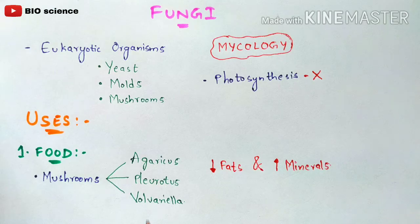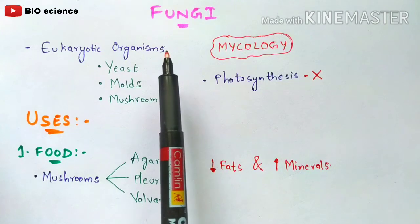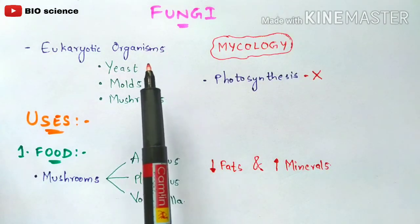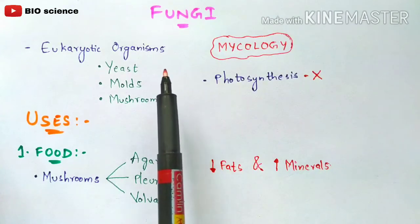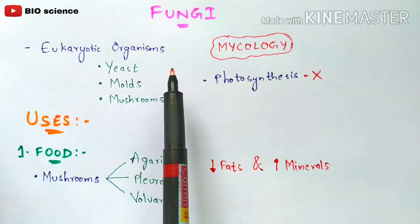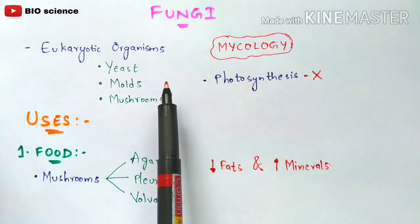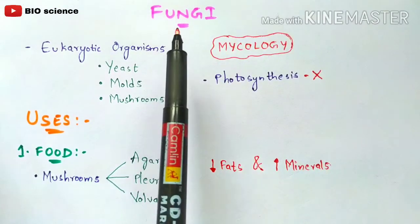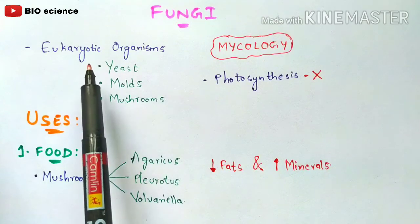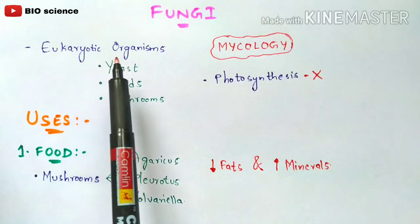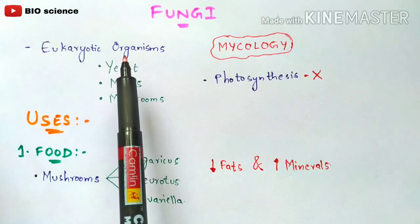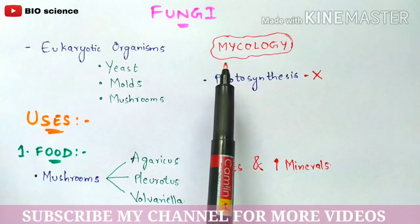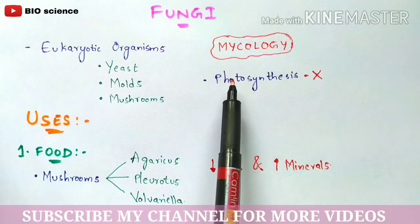In this video we are going to discuss about fungi. Fungi is the plural form and fungus is the singular form. This video will focus on the uses of fungi. Fungi belongs to the eukaryotic classification, so fungi are considered eukaryotic organisms. The study of fungi is called mycology. One important point to remember is that photosynthesis does not occur in fungi.